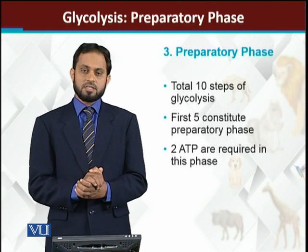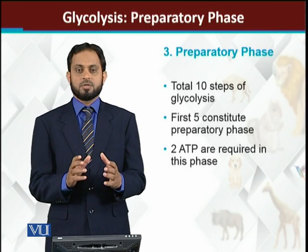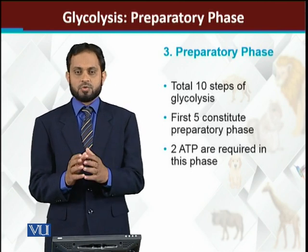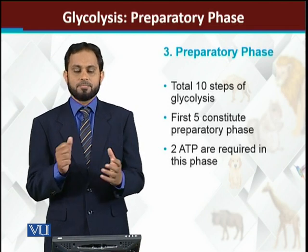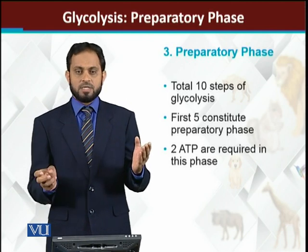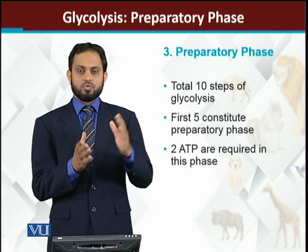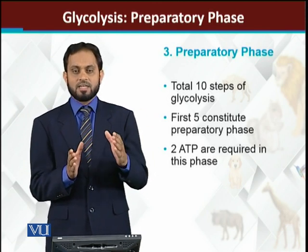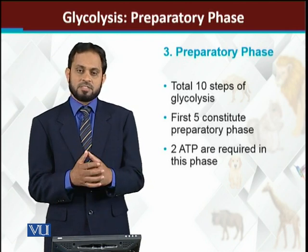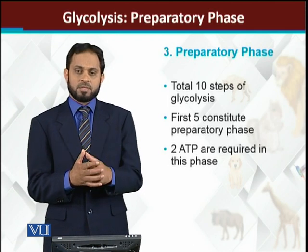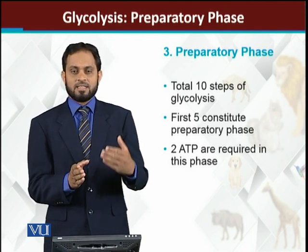Glycolysis basically a continuous process ہے۔ Glycolysis میں total 10 steps یا 10 reactions ہوتے ہیں — glucose سے start ہوگا اور it will end with pyruvate۔ Glucose سے pyruvate بننے تک there are 10 reactions۔ ان میں سے جو first 5 steps ہیں، ان کو continue کرنے کے لئے energy require ہوتی ہے — یعنی cells کو energy invest کرنی پڑتی ہے۔ وہ first 5 steps جن کو چلانے کے لئے cell energy invest کرتا ہے that is the preparatory phase۔